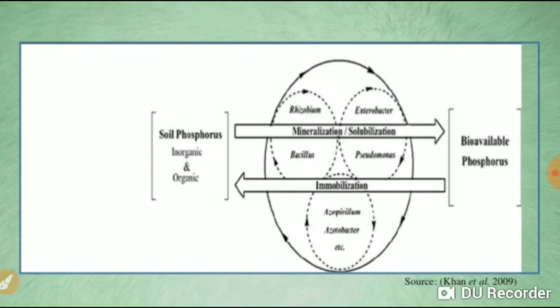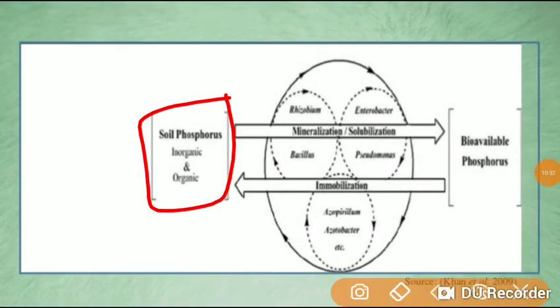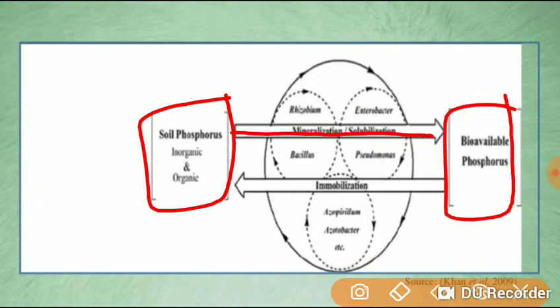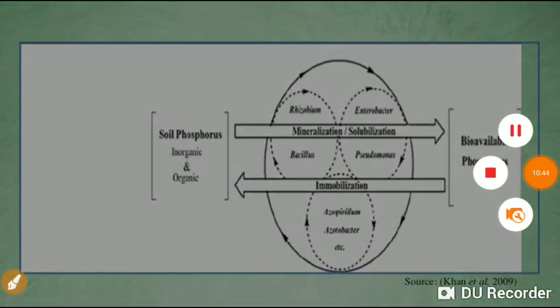Soil phosphorus exists in both inorganic and organic forms. It can be solubilized and made available for plant uptake, or it may be immobilized and converted back into the soil. This cycle is central to understanding soil phosphorus dynamics.